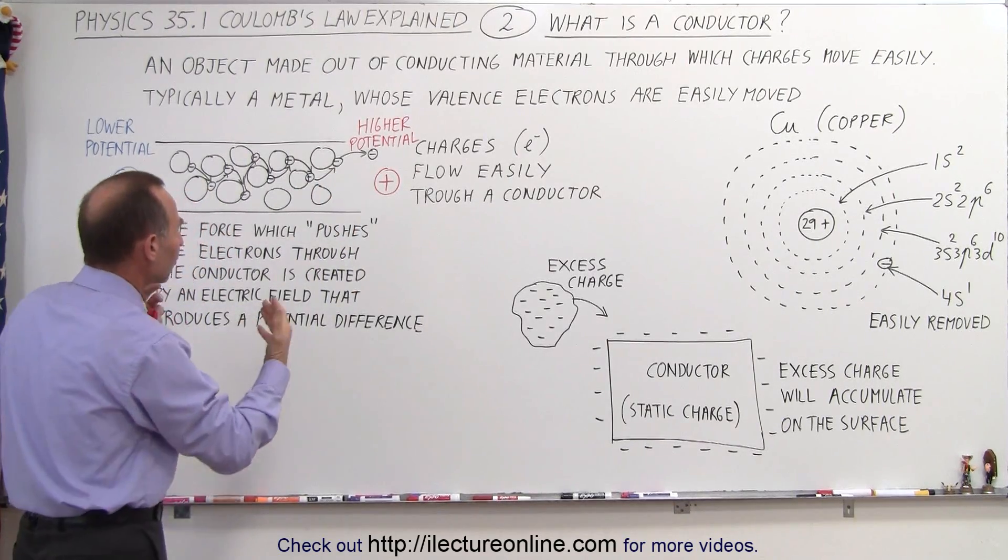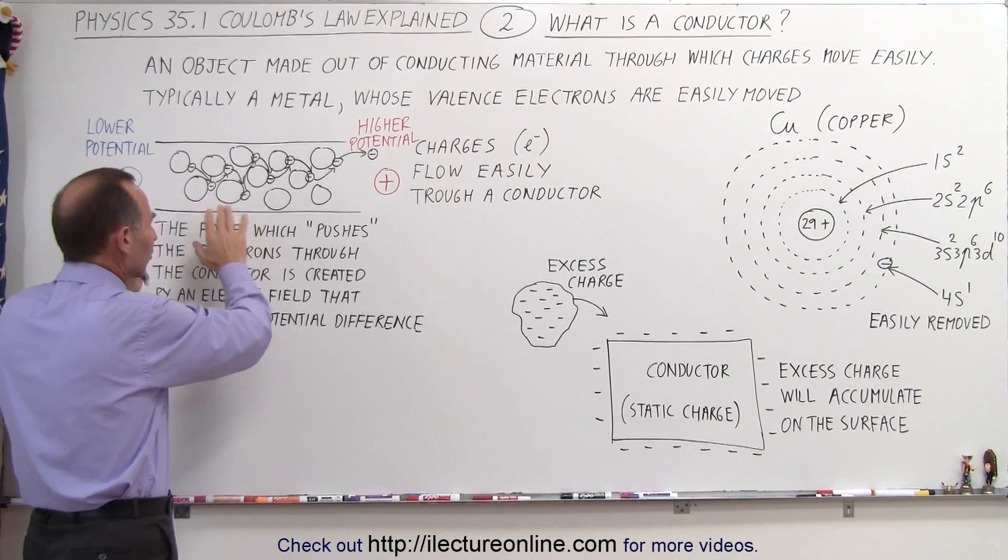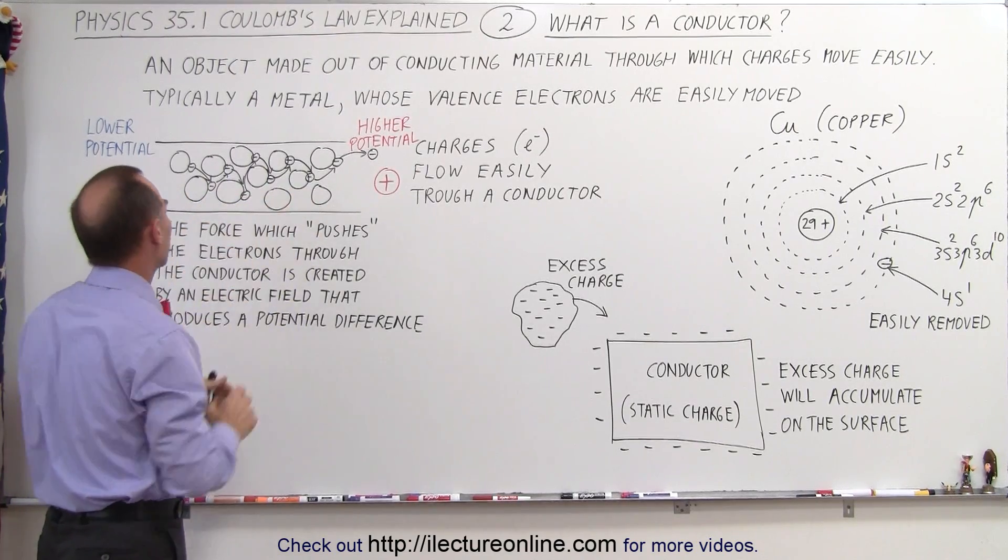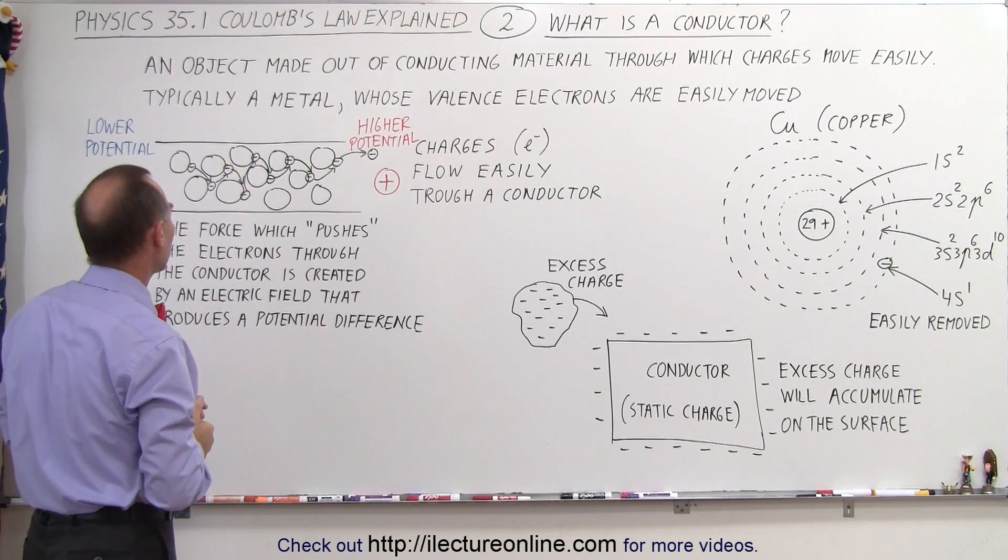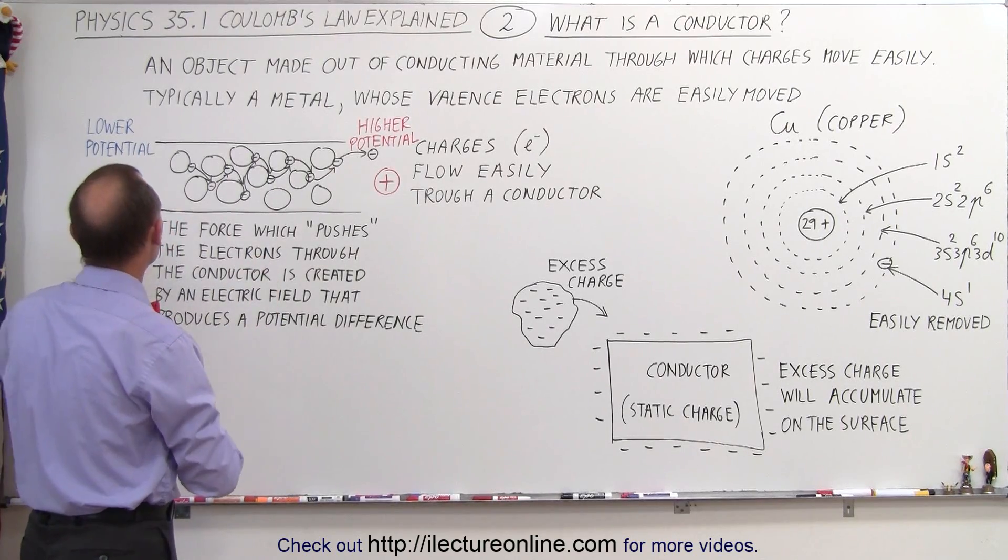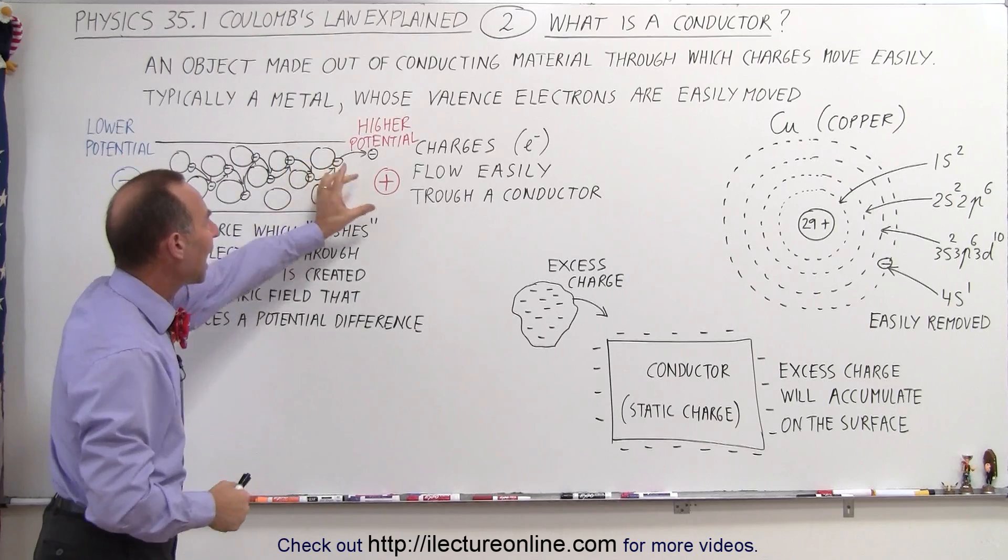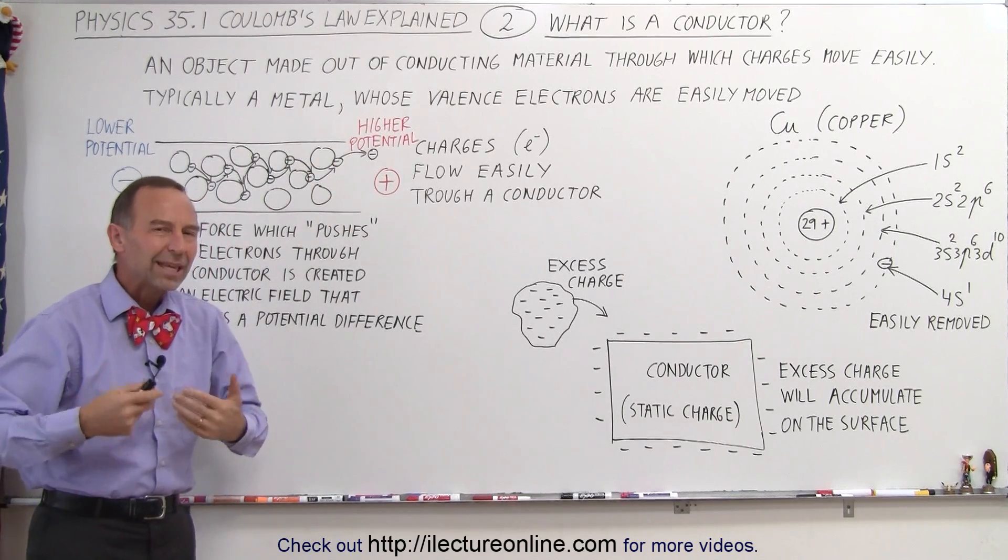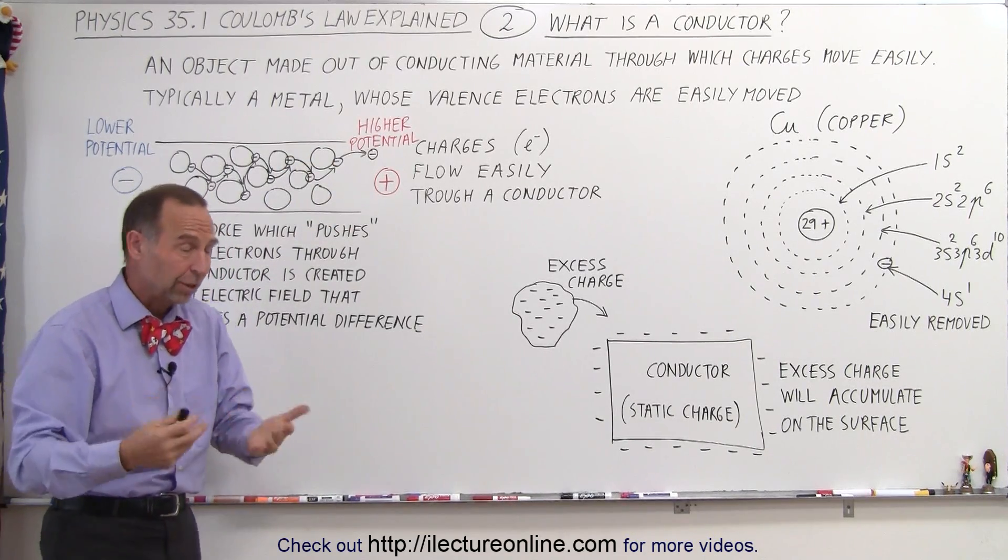We'll talk about those things at a later time, but at least you have to understand that by themselves, electrons will simply not move through a conductor. They need to be pushed through the conductor so they will move, in this case of an electron, from a lower potential to a higher potential.